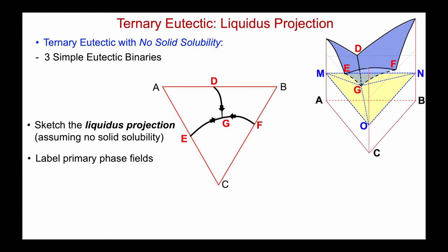It's very important to be able to label the primary phase fields — in other words, to project the liquid surfaces onto this projection. In the area A–D–G–E, the first solid phase to form would be A. Between D, G, F, and B — that liquidus surface is associated with B, so it's the primary phase field of B. And in the area C–F–G–E, the primary phase is C.